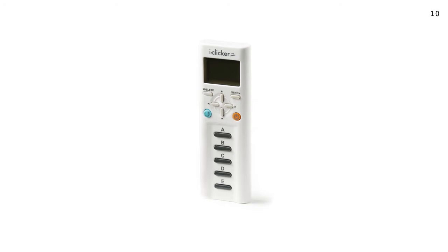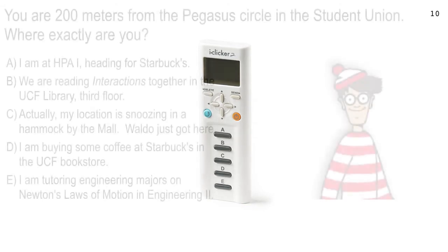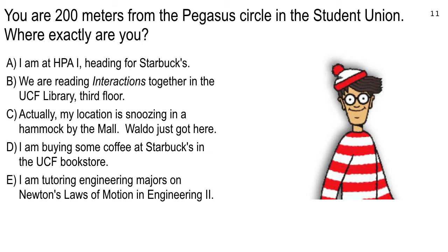Here's your question. You're 200 meters from the Pegasus Circle in the Student Union — you're not supposed to walk on that, by the way, freshmen. Where exactly are you? Options A, B, C, D, or E — which one do you think is 200 meters from the Pegasus Circle?